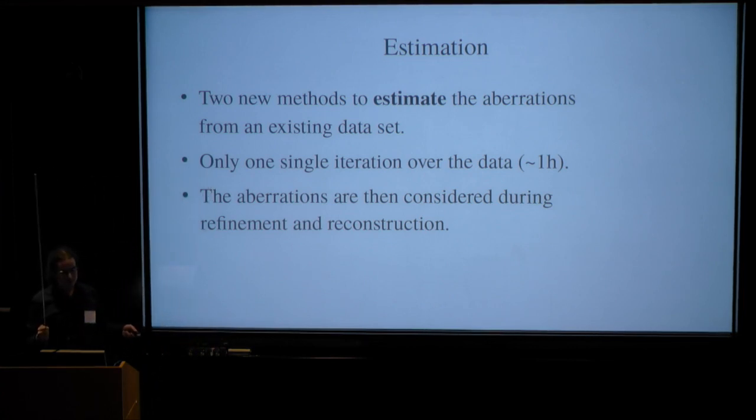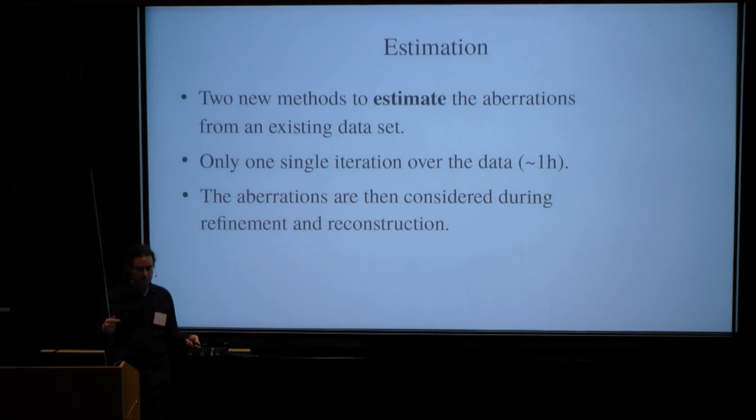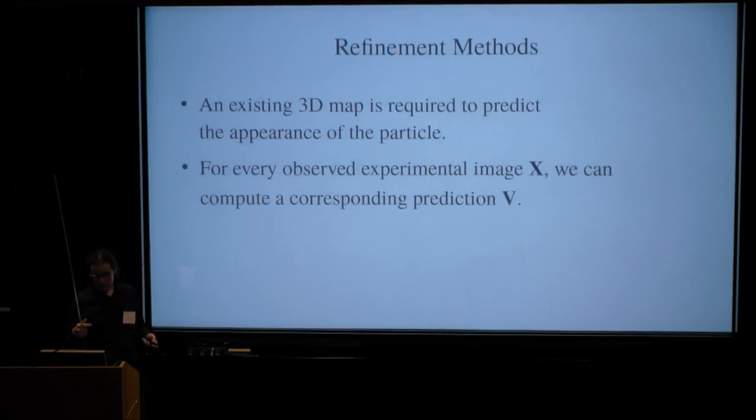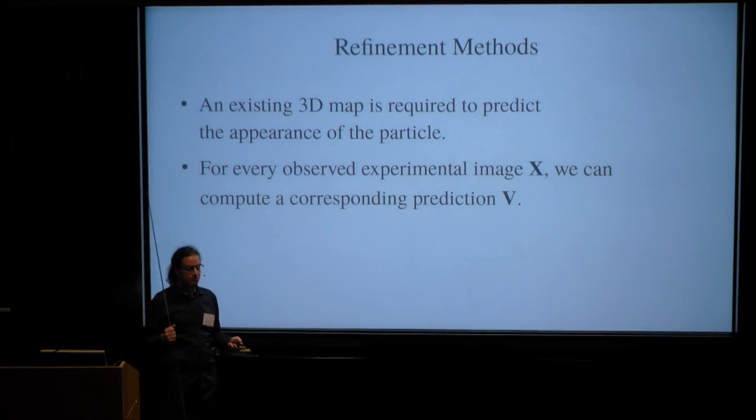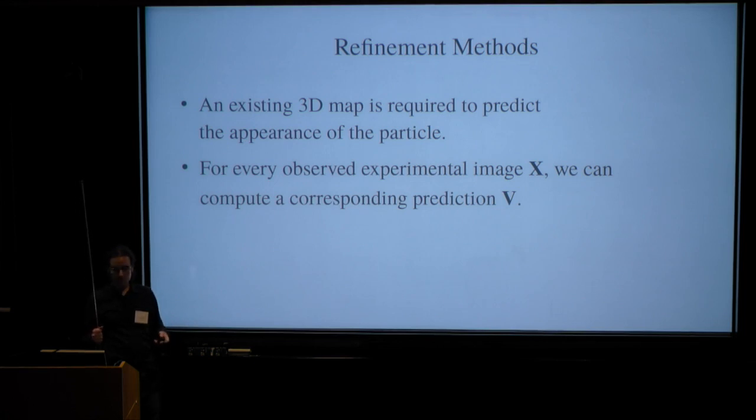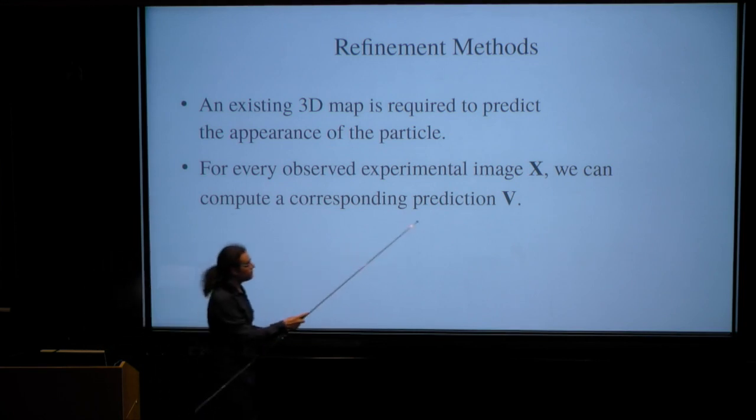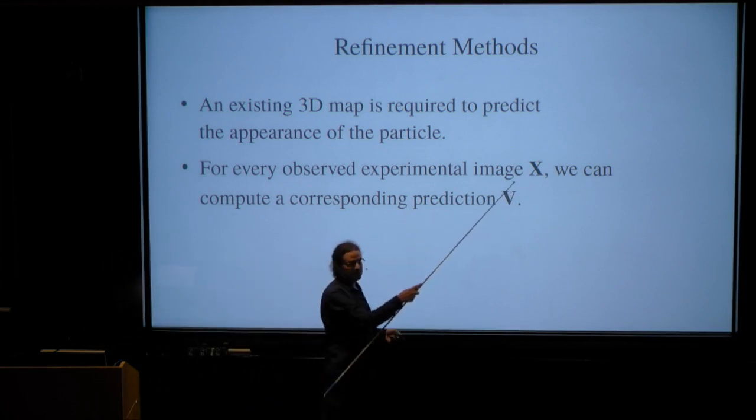More important than the model, of course, is that we now have methods to estimate the coefficients corresponding to these Zernike polynomials. All of these methods require only one scan through the data, which takes on the order of one hour, usually less. And then the Zernike polynomials are fitted and can be used in the next refinements. Because these are refinement methods, we require a previous 3D map that has been obtained without knowing these effects. And all the angles and the foci and everything that allows us to make a prediction that corresponds to every observed particle image X.